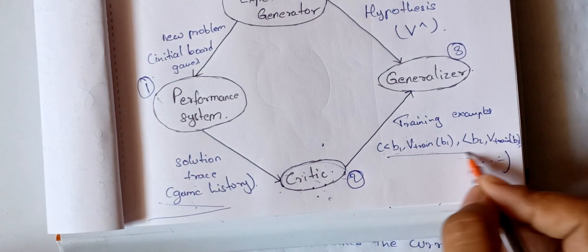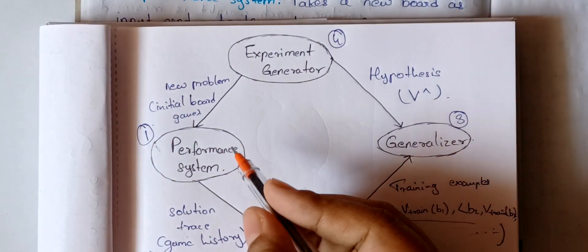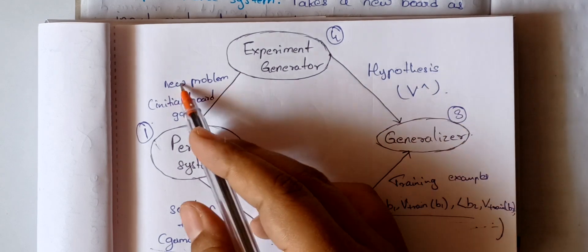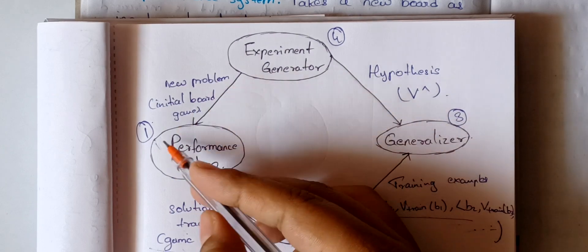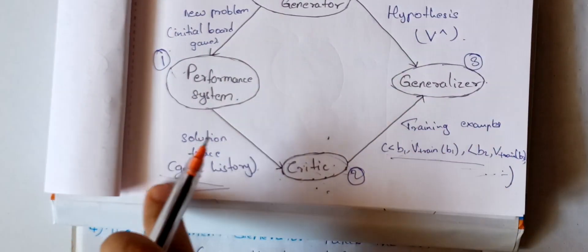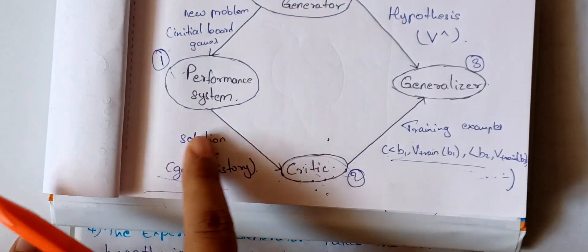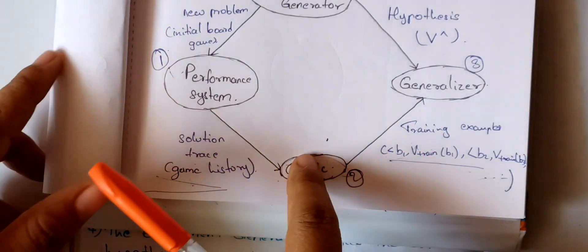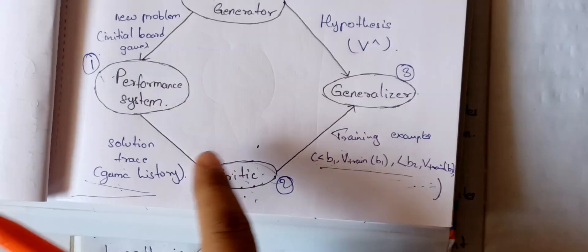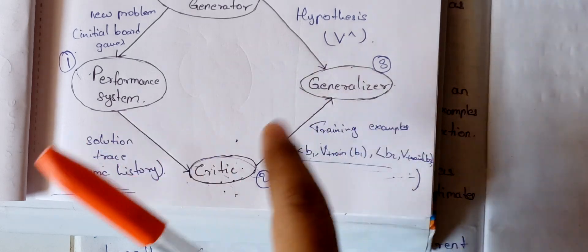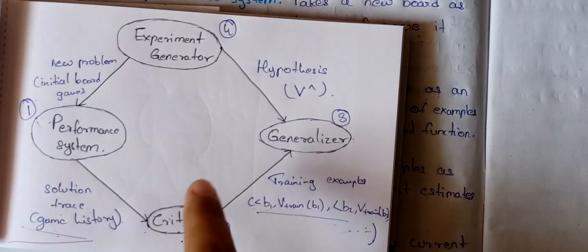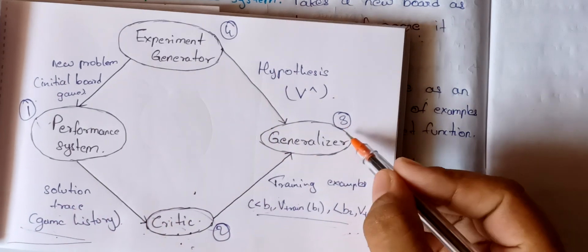So the flow is: the first input is a new board — an initial board state — fed into the performance system. The performance system outputs game history. That game history is the critic's input, and the critic outputs training examples.